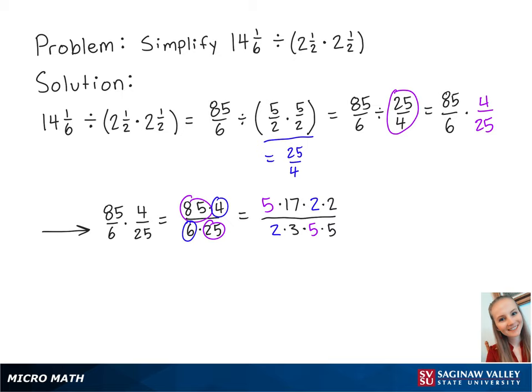Now that we have a 5 on the top and the bottom, these will cancel out, and since we have a 2 on the top and the bottom, these will also cancel out. So we are left with 17 times 2 over 3 times 5.